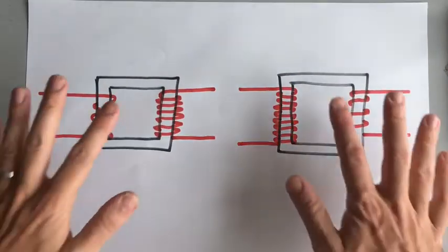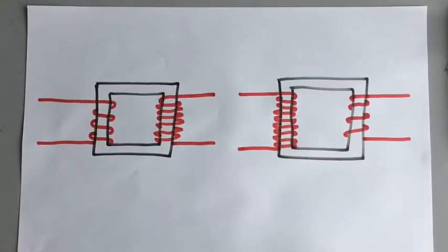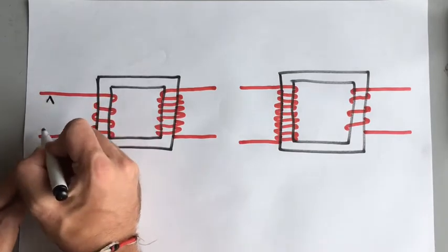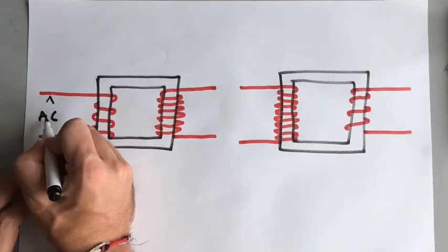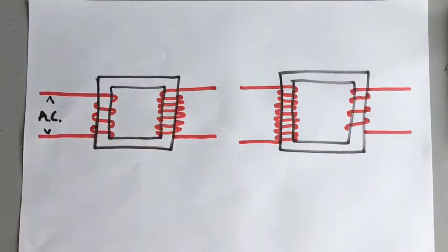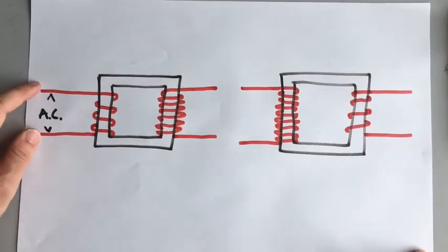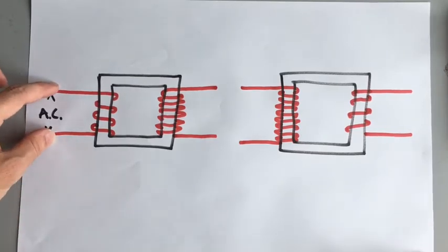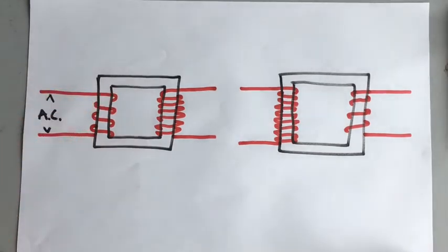Here I've drawn two examples of transformers. On the input — focusing on the one on the left first — we have an alternating current, and that comes from the power station. The alternating current is going positive, negative, positive, negative, repeatedly. Now when this alternating current comes in, remember that when a current flows through a wire, it creates a magnetic field.